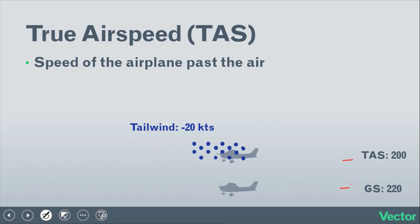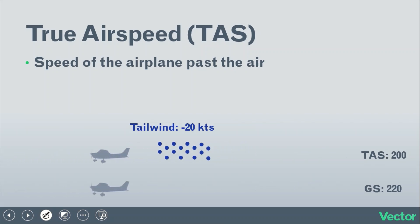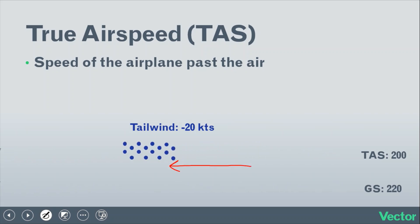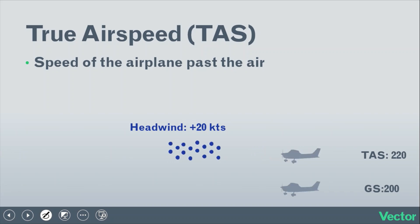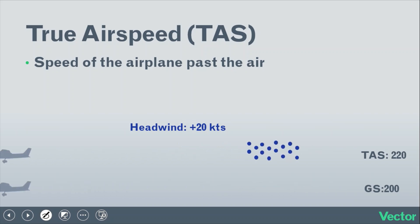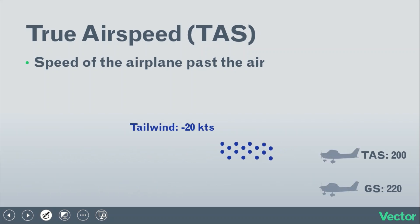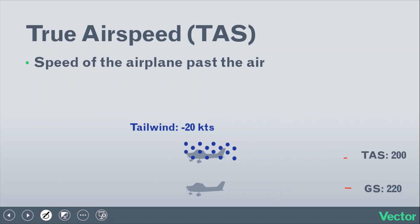With a tailwind, true airspeed is going to be less than ground speed, because the air mass is moving in the same direction as the airplane, so the relative speed between the two is less. Another way to think about it: a headwind slows the airplane over the ground, so ground speed is less than true airspeed in a headwind. A tailwind speeds up the airplane, so ground speed is higher than true airspeed in a tailwind.